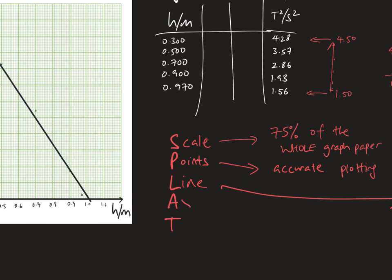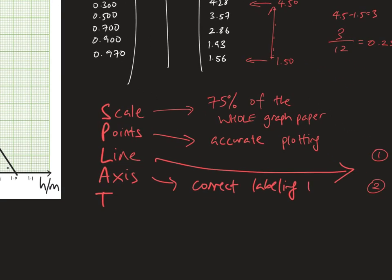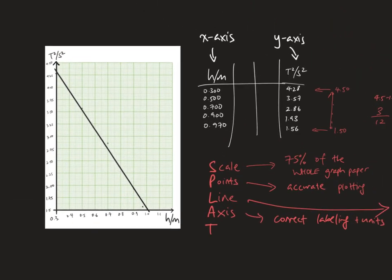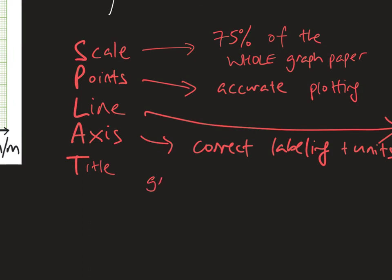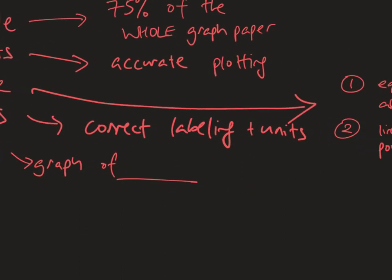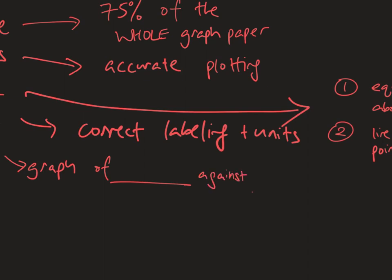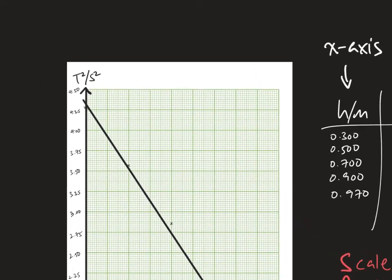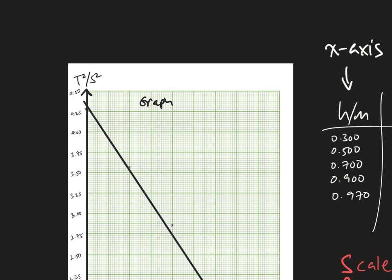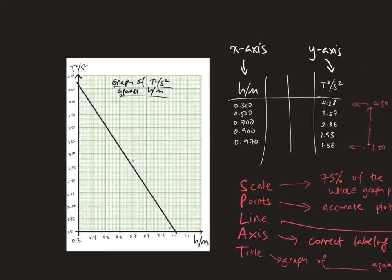The final thing, and actually, this should have gone ahead. So actually, this is axis. So we're looking for correct labelling and we're looking for correct units as well. So actually, I really did this at the start. Finally, we're looking for something called the title. Title is really easy. You just say, graph of whatever against whatever. So in this case, it will be graph of t squared slash s squared against h slash m. So let me go ahead and write that. In this case, you just write it here. Graph of t squared s squared against h slash m. Done. Of course, you can draw a line to underline it. And there you go. These are the main steps that you need to draw a good graph.